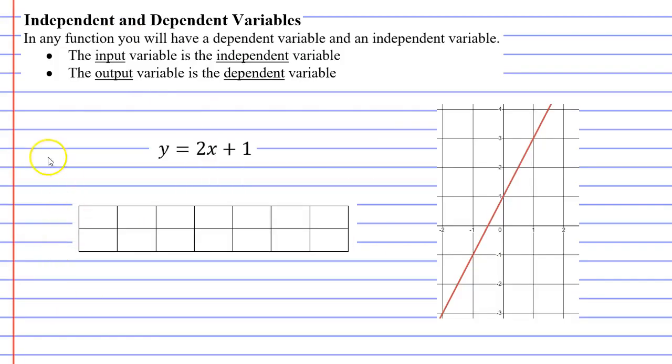So what do we mean when we talk about dependent and independent variables? In the function below, y equals 2x plus 1, we have two variables, x and y.